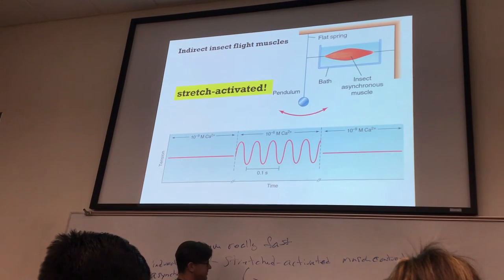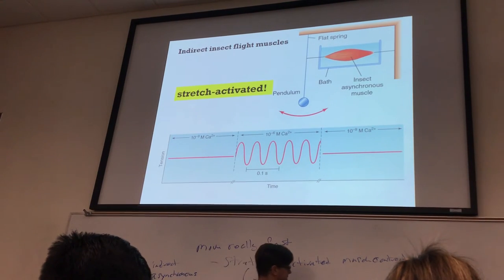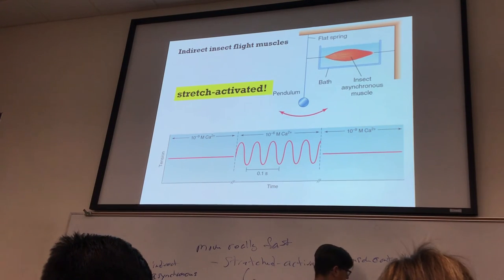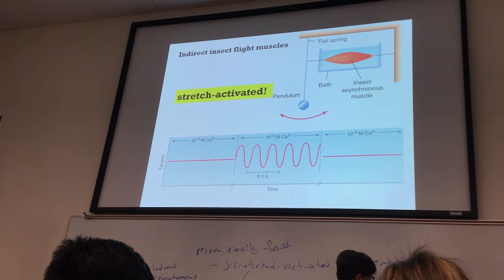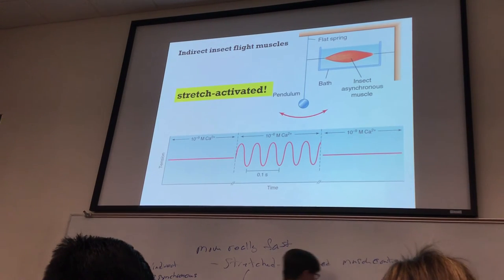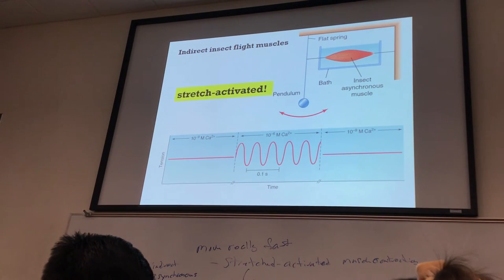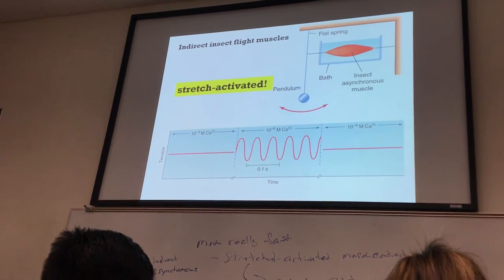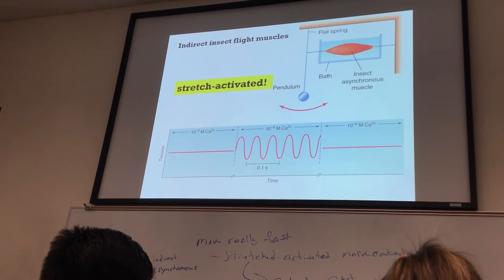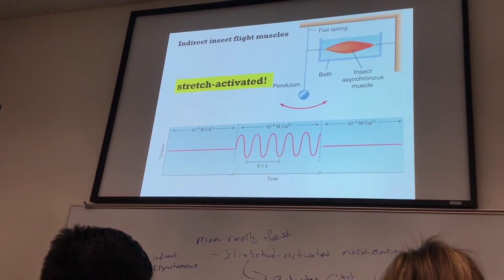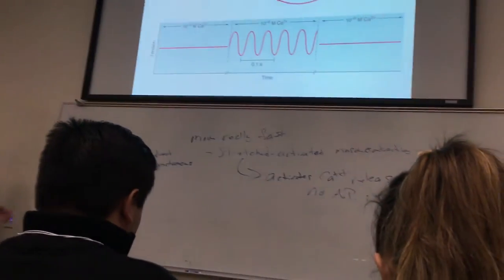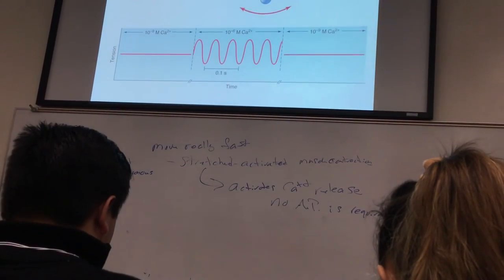Stretch-activated muscle contractions: the stretching activates calcium release. No action potential is required — with an asterisk, because in the animal, to get it started, there has to be an action potential. An insect ready to fly has to have an action potential to start the muscles contracting. Action potentials are sent at intervals to keep the muscles contracting, because without them the contraction frequency will decrease over time.